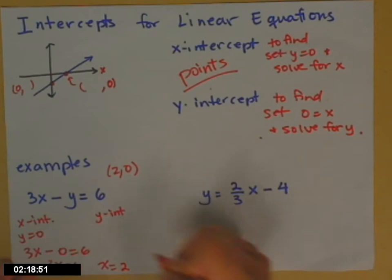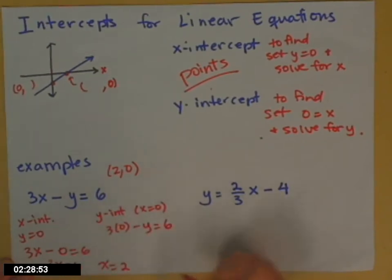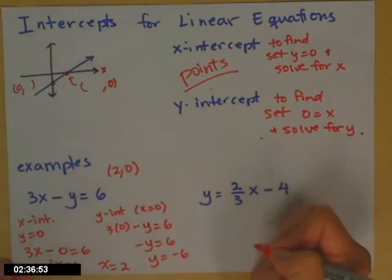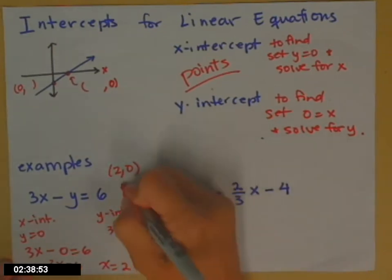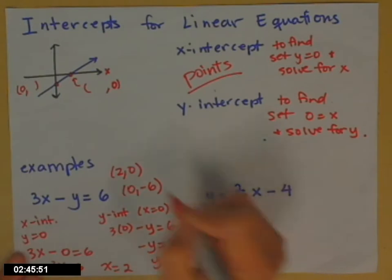For the y-intercept, 0 goes in for x. So now I have 3 times 0 minus y equals 6. 3 times 0, that was 0. So negative y equals 6, which means that y equals negative 6. And so the y-intercept, it's an ordered pair. You want to make your teacher smile. And when you write it as an ordered pair with a 0 in for the x, that'll do it.